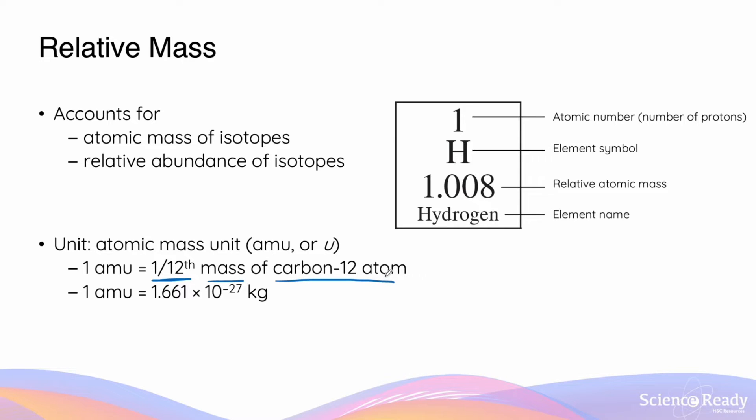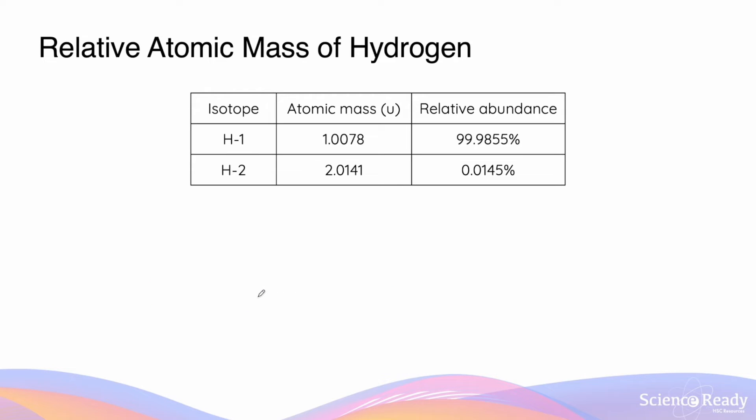If we want to convert into kilograms, one amu is equal to 1.661 times 10 to the power minus 27 kilograms. That's really the reason why we are using the unit of amu to describe atomic masses, because it will be a hassle to always use kilograms when the actual mass is significantly smaller than a kilogram. The best way to understand and know how to calculate atomic mass is to use some examples.